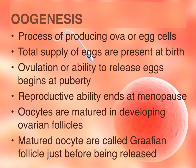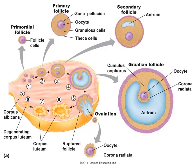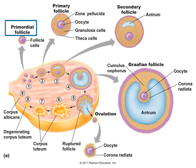The oocyte is the actual egg cell, and together with its covering it is called the follicle. Right before the egg cell is released during ovulation, the name of that mature follicle is called the Graafian follicle. The first immature stage is called the primordial follicle, which contains follicle cells that will eventually become the oocyte.